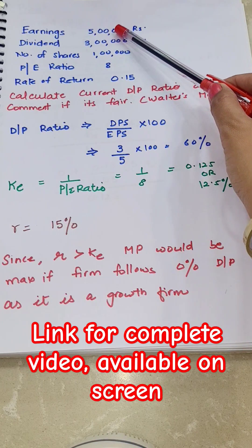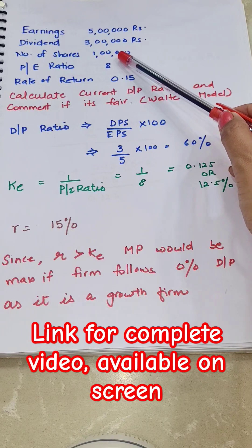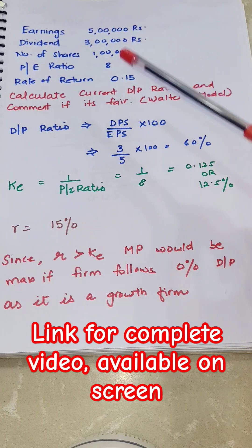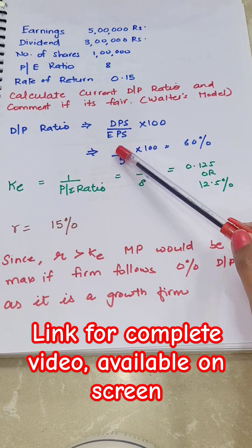We can take total earnings of the company by number of shares, that means 5 lakh by 1 lakh is 5 rupees per share is the earning.